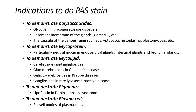Indications: To demonstrate polysaccharides — in glycogen storage disorder we can demonstrate glycogen; in basement membrane of glands and glomeruli; the capsule of various fungi such as Cryptococcus, Histoplasma, and Blastomycosis; and to demonstrate glycoproteins, particularly neutral mucins in endocervical glands, endospinal glands, and bronchial glands.